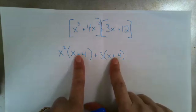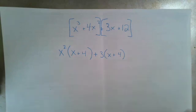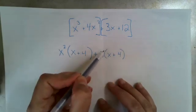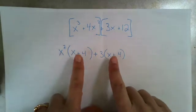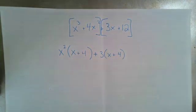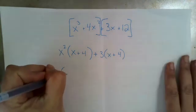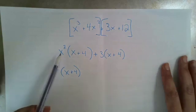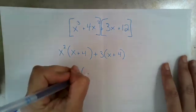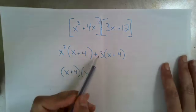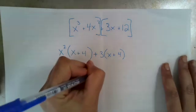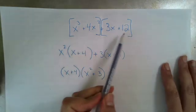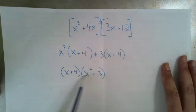These are the same, and here's what I find to be very elegant. I have this first term and this second term, and I ask: what is common to both? x plus 4 is common to both. So I'm going to factor x plus 4 out of both terms. What I'm left with from my first term is x squared, and what I'm left with from my second term is positive 3. And so this four-term polynomial factors into this.